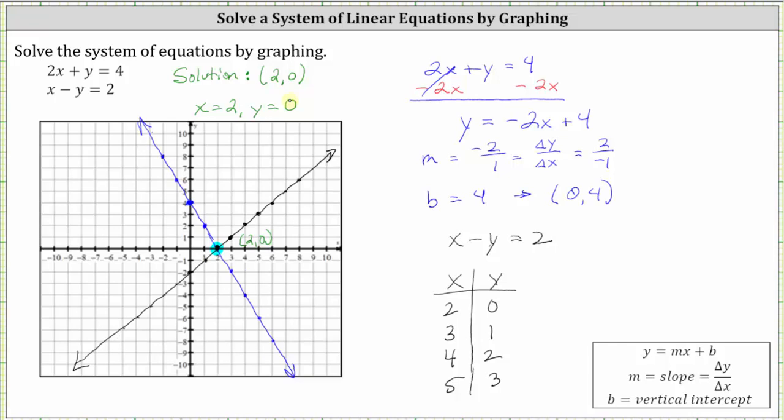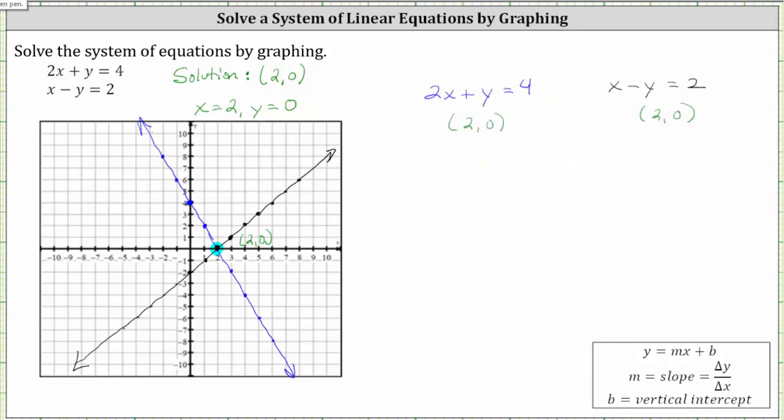And before we go, let's verify these values do satisfy both equations. To do this for both equations, we substitute 2 for x and 0 for y. Performing the substitution into the first equation gives us 2 times 2 plus 0 equals 4. Simplifying, we do have 4 = 4, which is true.